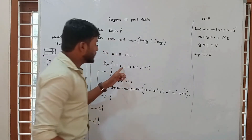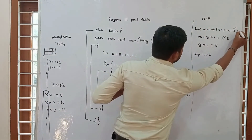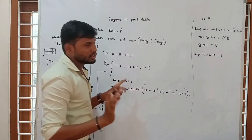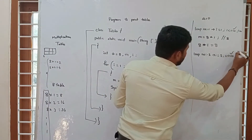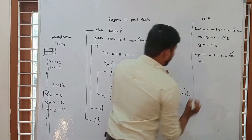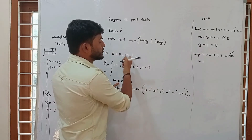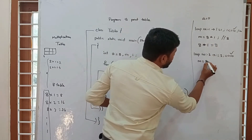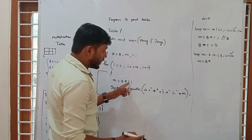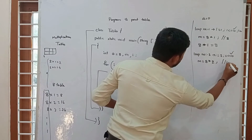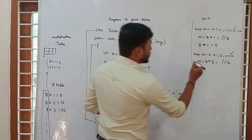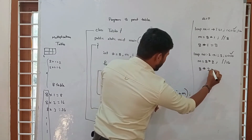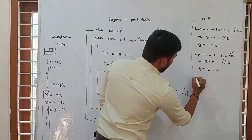Coming to loop number 2: i value will be changed due to i++, so i is now 2. The condition 2 is less than or equal to 10 is satisfied. Now m equals a into i — a is 8, i is 2 — so m will be 16. The output prints: 8 * 2 = 16.